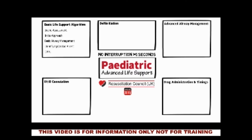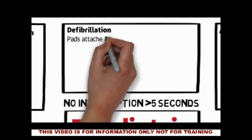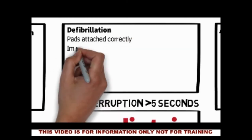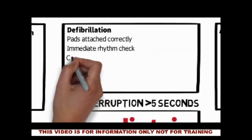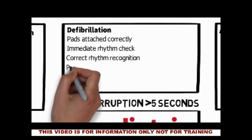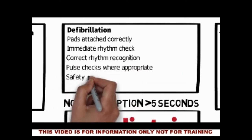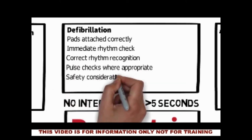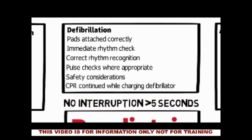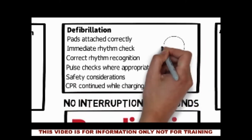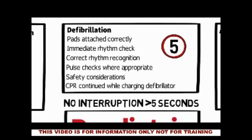For defibrillation, key points are: pads attached correctly, an immediate rhythm check, correct rhythm recognition, pulse checks where appropriate, safety considerations, and CPR continued while charging the defibrillator. And again, no interruption of longer than 5 seconds of CPR.